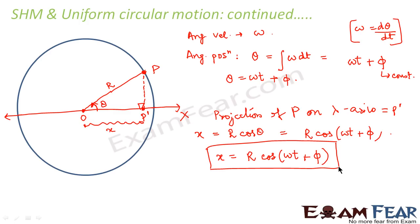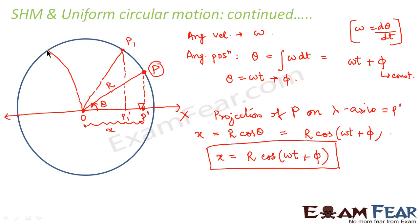This shows that the projection of particle P — which is the position of the particle at any instant of time t — gives projection P dash on the x-axis. As the particle keeps moving in the circular path, at time t it is at point P, then it moves to point P1 with projection P1 dash, then to P2 with projection P2 dash. So as the particle on the circular path progresses from P to P1 to P2, the projections also move from P dash to P1 dash to P2 dash and so on.